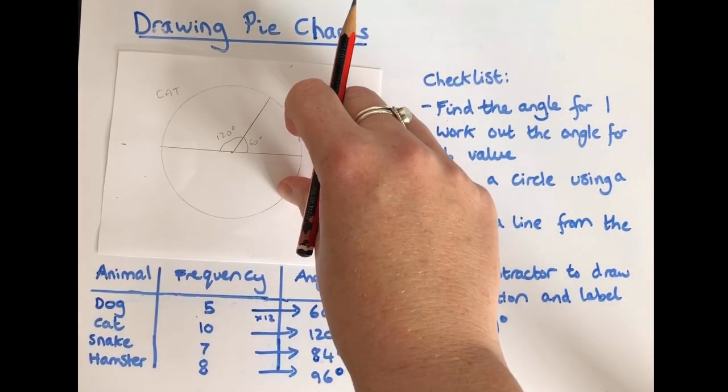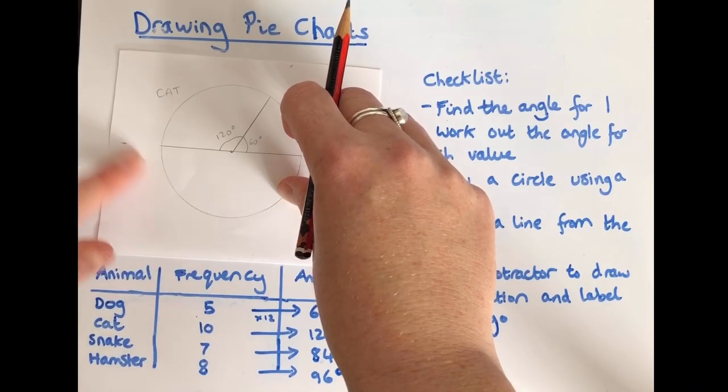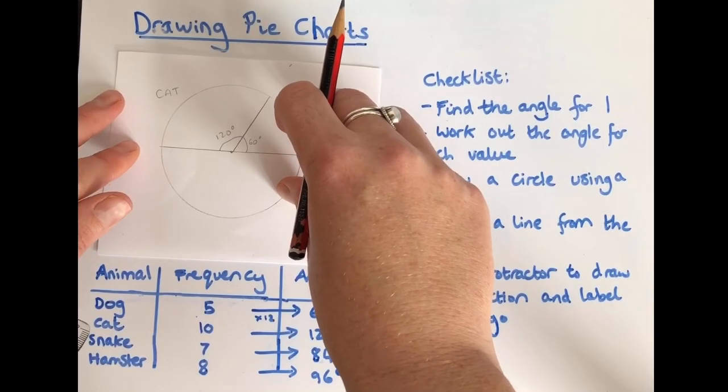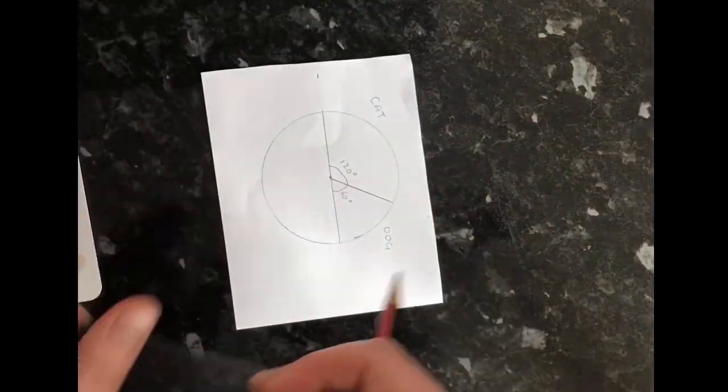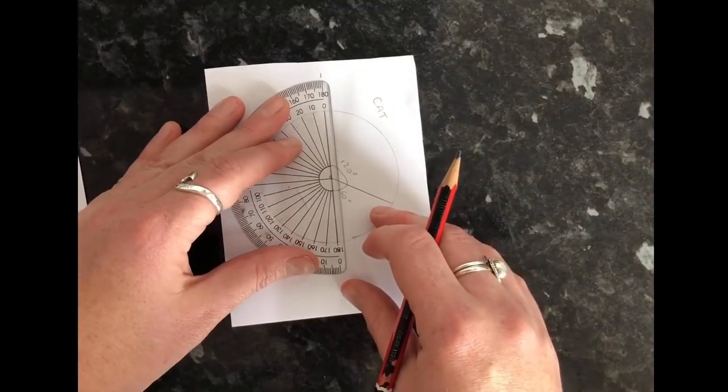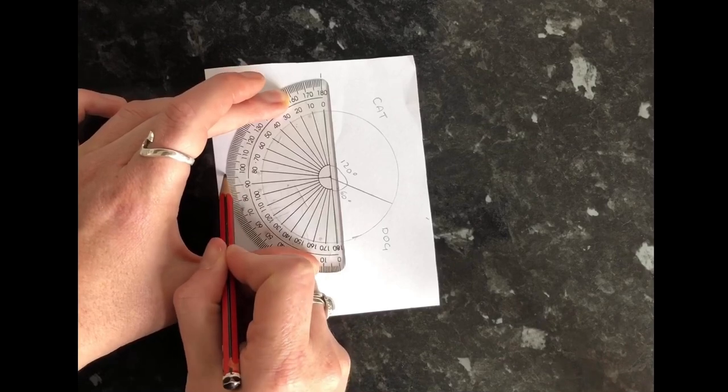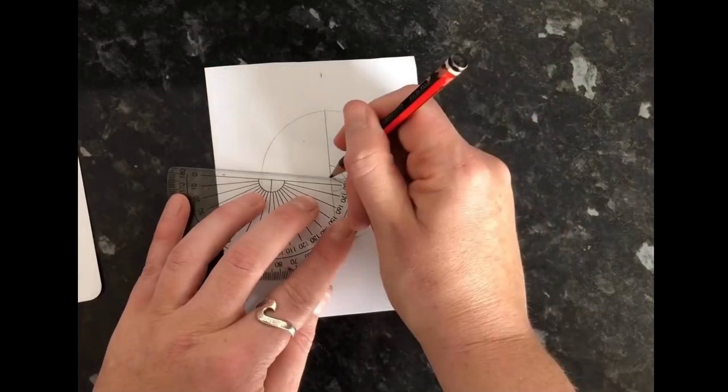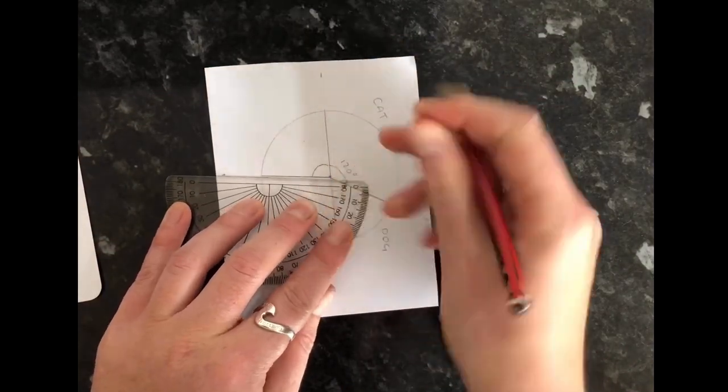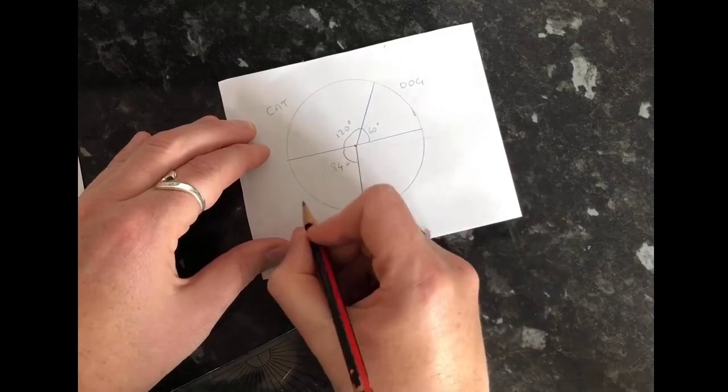And then continue on for the next one which is a snake, 84 degrees. Now you can actually twist your paper so if I just move this out for a second. Twist my paper so I can put that a bit neater. 84 to 80, and then I'm going to count on 1, 2, 3, 4 degrees on my protractor. Draw that line. And then I write it carefully and that was for snake.